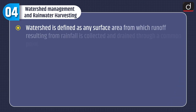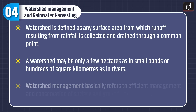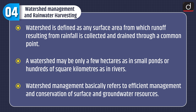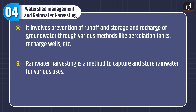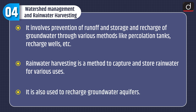Now let's understand about watershed management and rainwater harvesting. A watershed is defined as any surface area from which runoff resulting from rainfall is collected and drained through a common point. A watershed may be only a few hectares as in small ponds, or hundreds of square kilometers as in rivers. Watershed management basically refers to efficient management and conservation of surface and groundwater resources. It involves prevention of runoff and storage and recharge of groundwater through various methods.